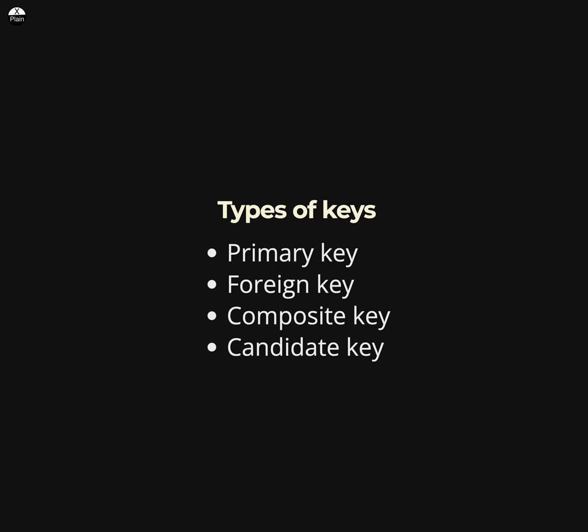Foreign key: this is a column in a table that refers to the primary key of another table. It is used to establish a relationship between the two tables. Composite key: this is a key made up of two or more columns that together uniquely identify a row in a table.